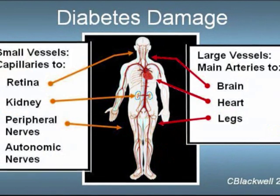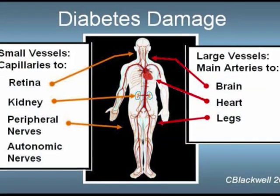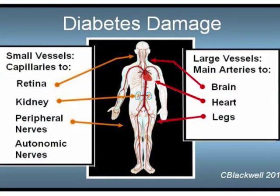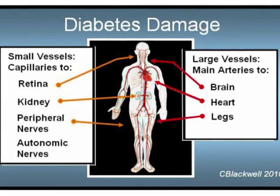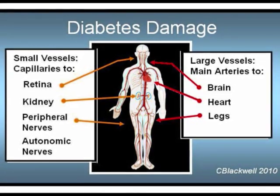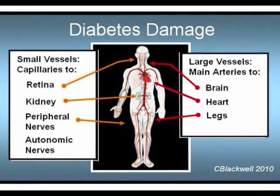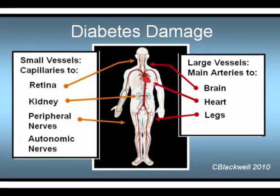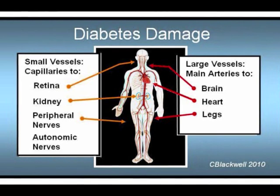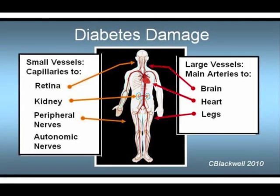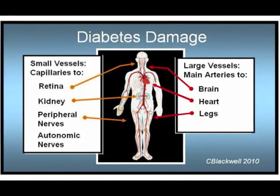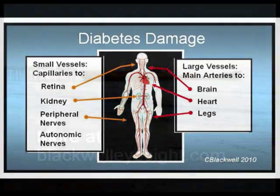To review, in diabetes, elevated blood sugar and other pathologic processes cause damage to both small and large blood vessels throughout the body. In the next video, we will look at the relation between blood sugar control and specific complications. The message is that the effort you spend in controlling blood sugar, blood pressure, and lipids makes a big difference in your long-term health.